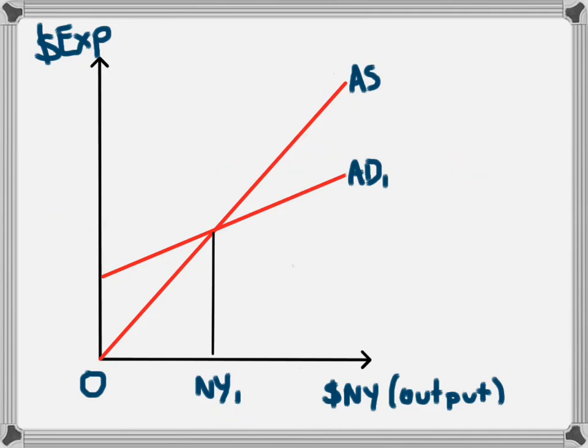In a similar way, we could see that we could have a decrease in aggregate demand. And as you would expect, a decrease in aggregate demand will lead to a decrease in national income. There's also a multiplier effect here too. So aggregate demand decreases from AD1 to AD2, and this leads to a decrease in national income from NY1 to NY2.